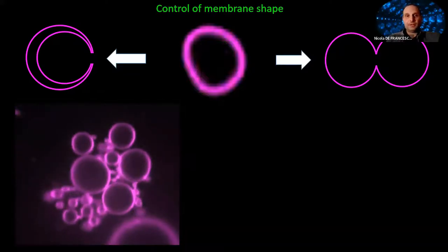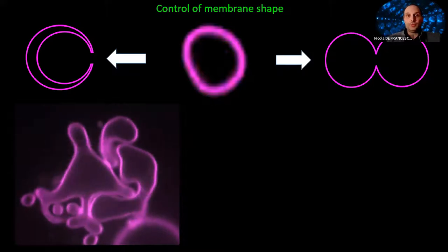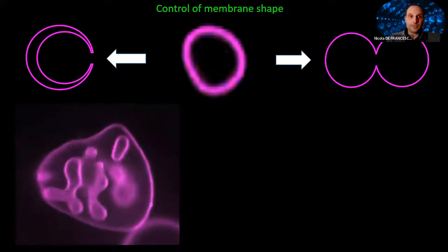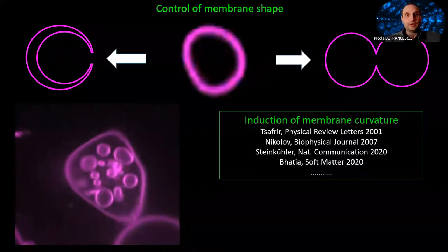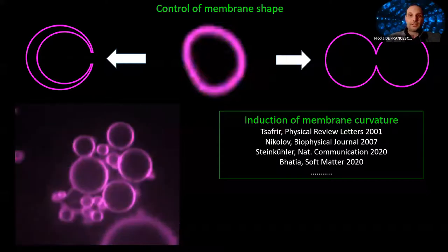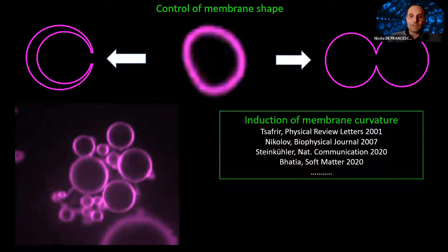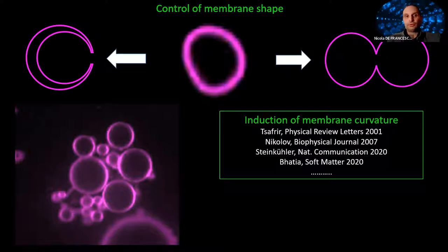The answer is actually simple and we've known it for decades: we need to introduce membrane curvature in a controlled way. This has been done in a number of papers — some listed here, but this is not exhaustive — particularly for the dumbbell shape. However, one thing is to produce one or a few dumbbells to study membrane deformation itself. Another thing entirely is to produce them in high yield, reproducibly, and in a way compatible with protein reconstitution. Previous methodologies have failed to do this, because it is very difficult.